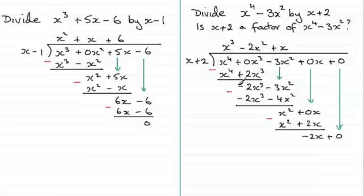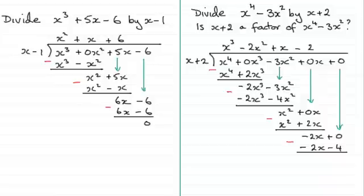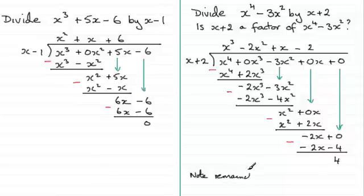What do we multiply x by to get minus 2x? That's minus 2. So minus 2 times x plus 2 gives minus 2x minus 4. Subtracting: the x terms cancel, and 0 minus minus 4 gives plus 4. So the remainder is equal to 4. Therefore x plus 2 is not a factor — it would only be a factor if that remainder were 0.